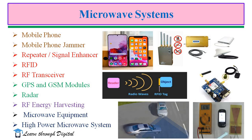Here I have mentioned a few examples of microwave systems. The mobile phone is the best example of a microwave system — we are always carrying one. Other examples include mobile phone jammers used in colleges or hospitals, repeater signal enhancers for long-distance communication, RFID, RF transceivers, GPS and GSM modules, radar, RF energy harvesting, and microwave equipment such as spectrum analyzers and vector network analyzers. High-power microwave systems are also included.